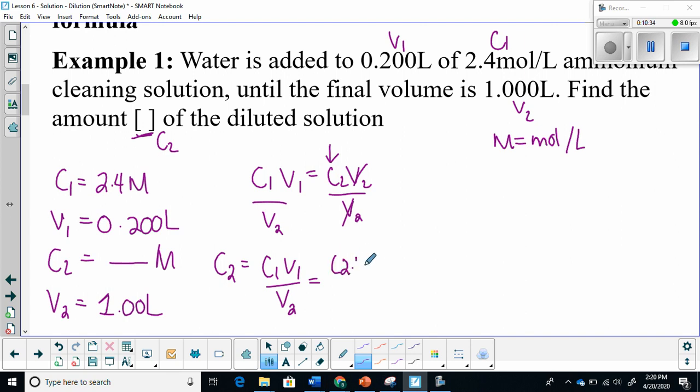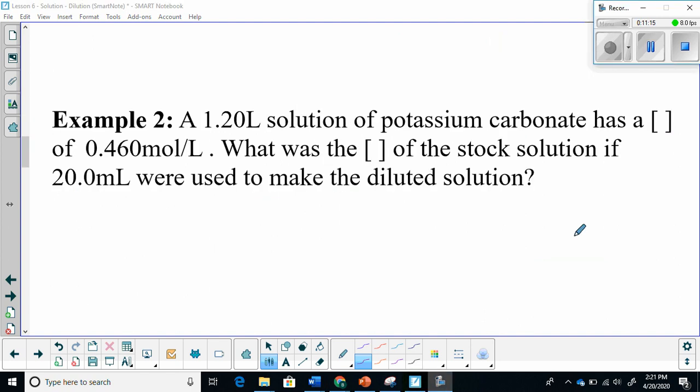Let's plug some numbers in. So 2.4 moles per liter multiplied by 0.2 liters divided by 1 liter. Liter cancels out and I'm left with moles per liter. Perfect. That's what I need. Once I calculate that all out, I am going to get a concentration of 0.480 moles per liter. This makes sense. Our volume increased, so our concentration should decrease.